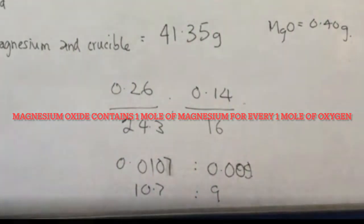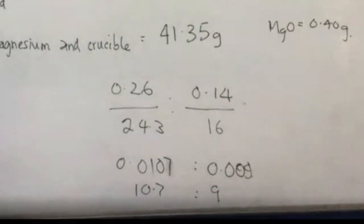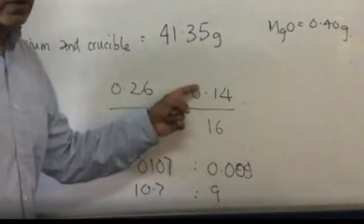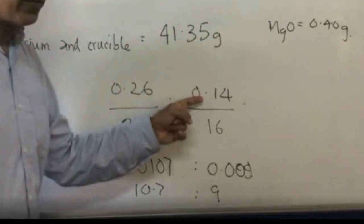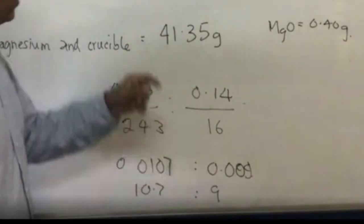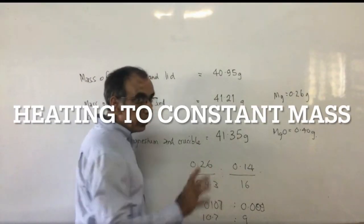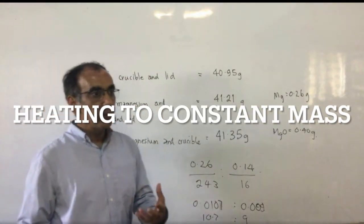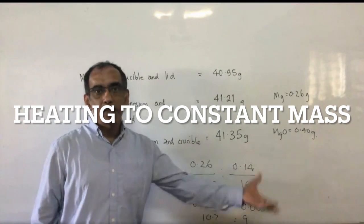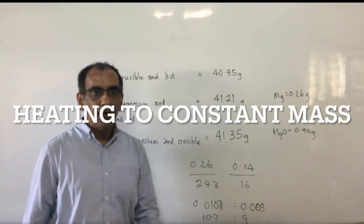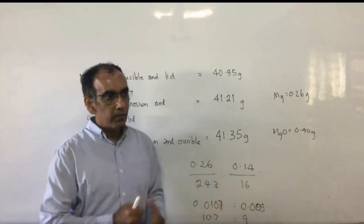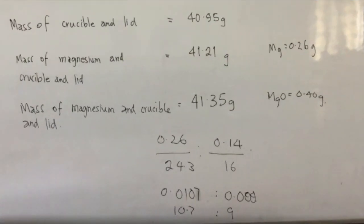And if we continue to heat that like Mr. Ranjan is doing, chances are we would get a little bit more here as well. This might go up to 0.15. This mass might change to 41.36. We will know that we're done with the whole thing when we get to the point where every time we heat it and we come back and find the mass, it stays the same. We heat to constant mass. And it's an example of how you find the empirical formula of something.